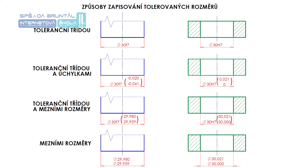Toleranční značkou spolu s číselnými hodnotami úchylek nebo mezních rozměrů v případech, kdy není jasné, bude-li mít výrobce potřebné mezní kalibry. Třetí možnost je úchylky zapisovat za značkou do závorky. Horní úchylka se zapisuje vždy nad úchylku dolní, nezávisle na tom, jedná-li se o rozměr vnější (tedy o hřídel) nebo vnitřní (o díru). Úchylky se zapisují číslicemi stejně velkými jako kóta.